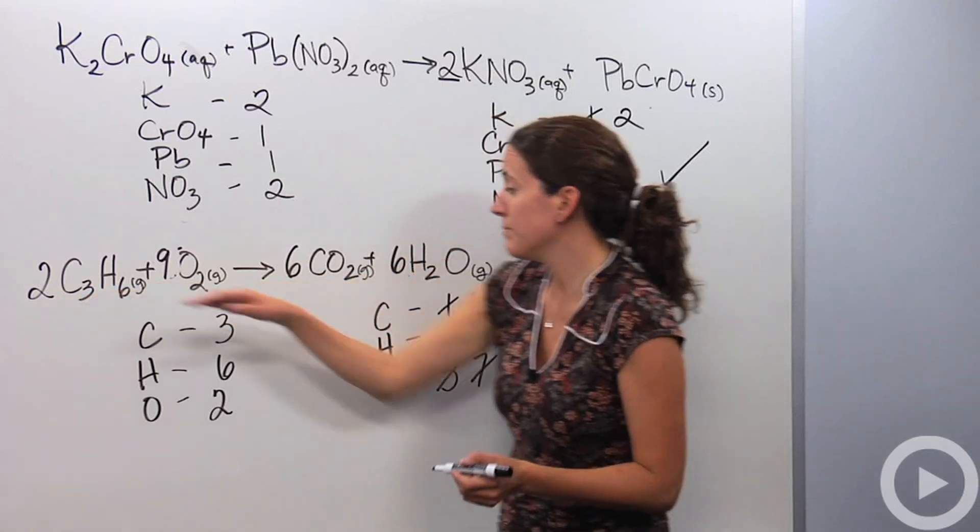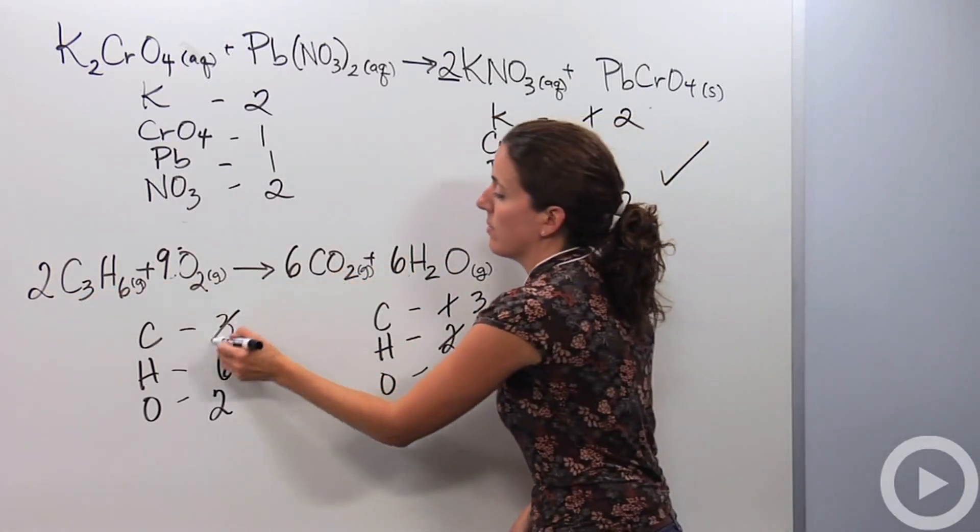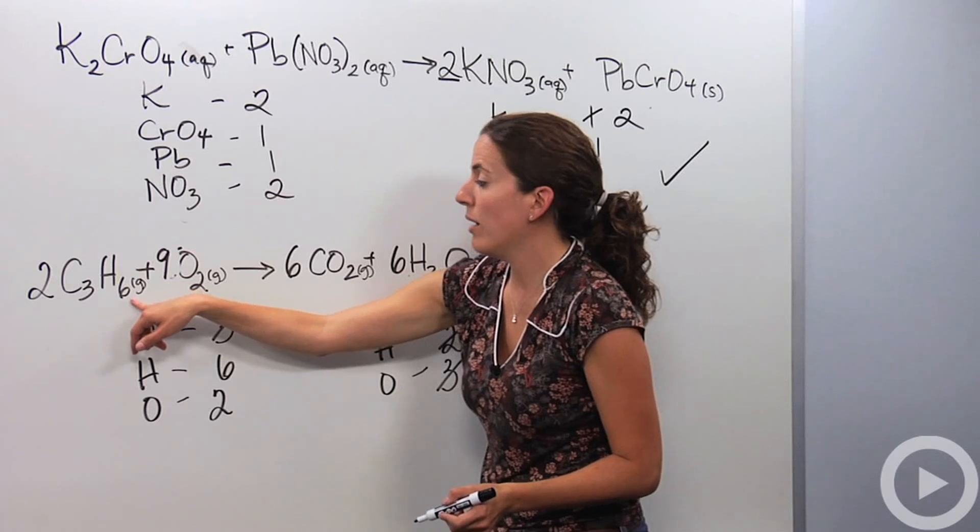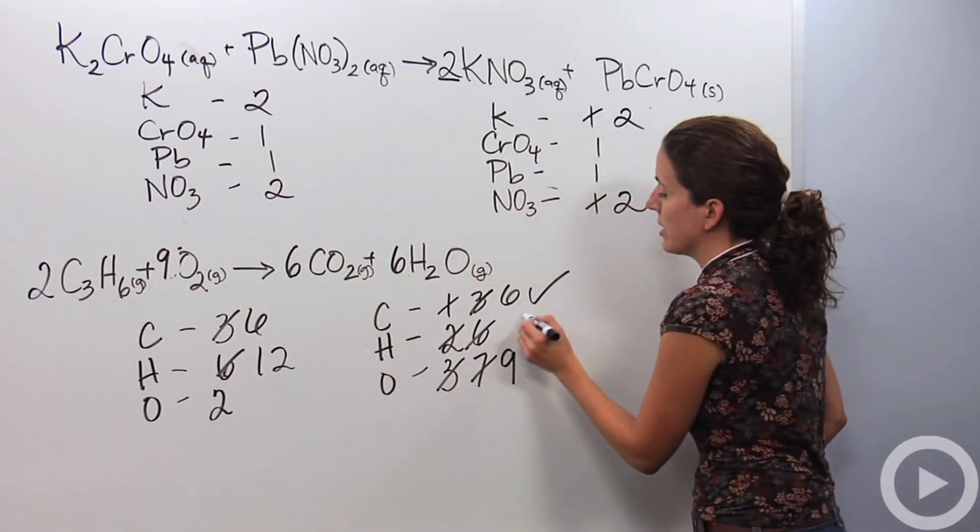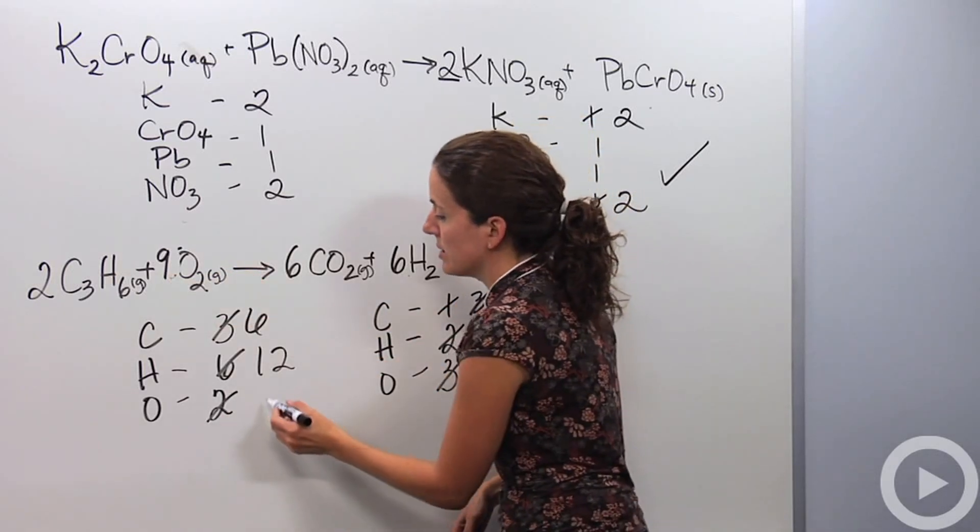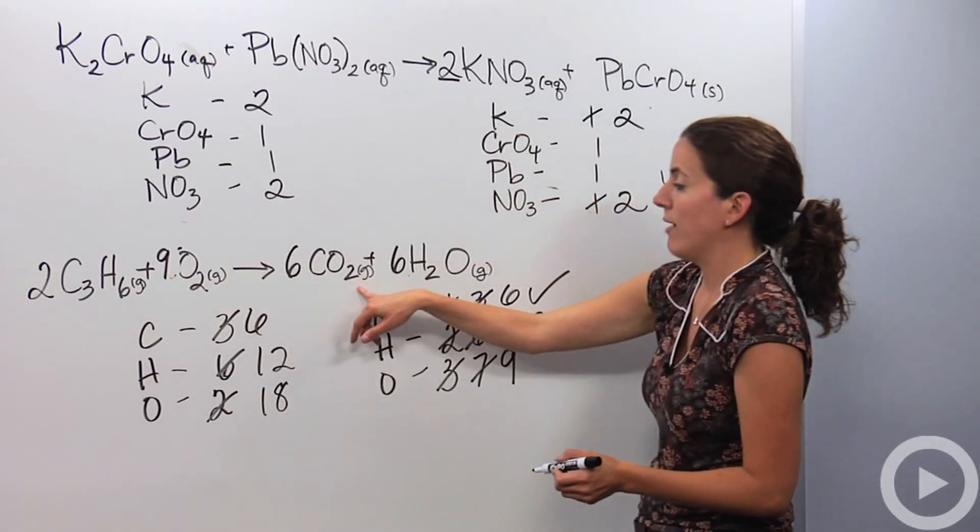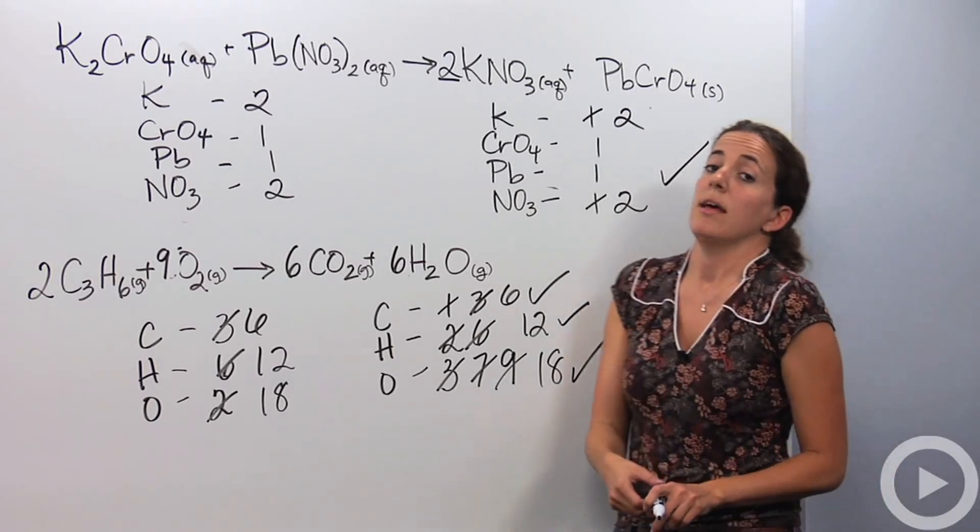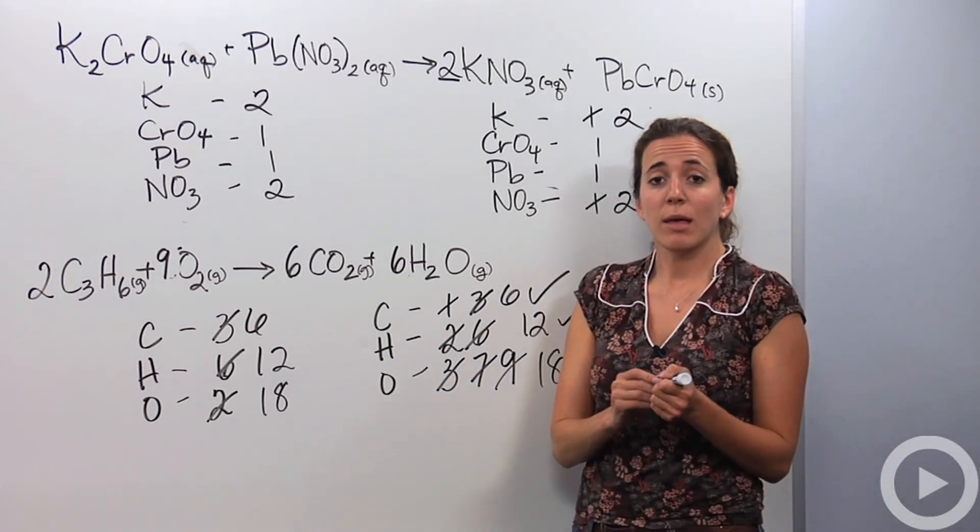So then let's check it. We have six carbons, six carbons, check. We have 12 hydrogens, 12 hydrogens, awesome. We now have 18 oxygens. We now have 12 plus six, great, 18 oxygens, we are done. And that is how you balance chemical reactions.